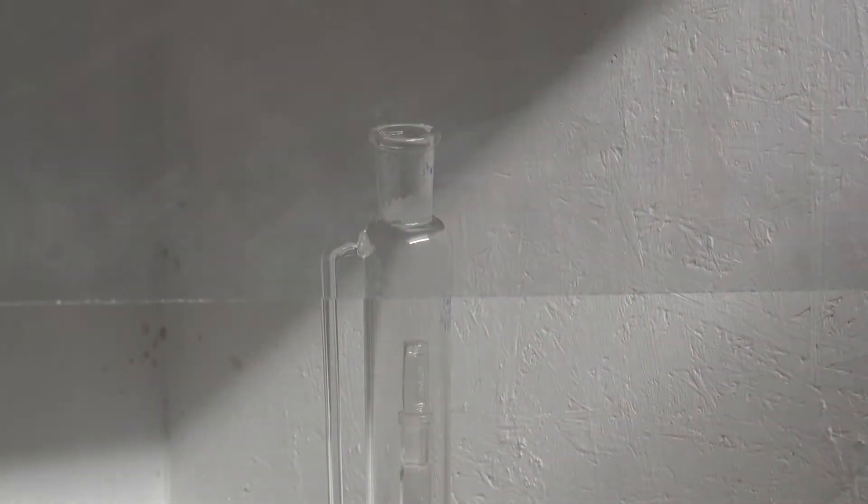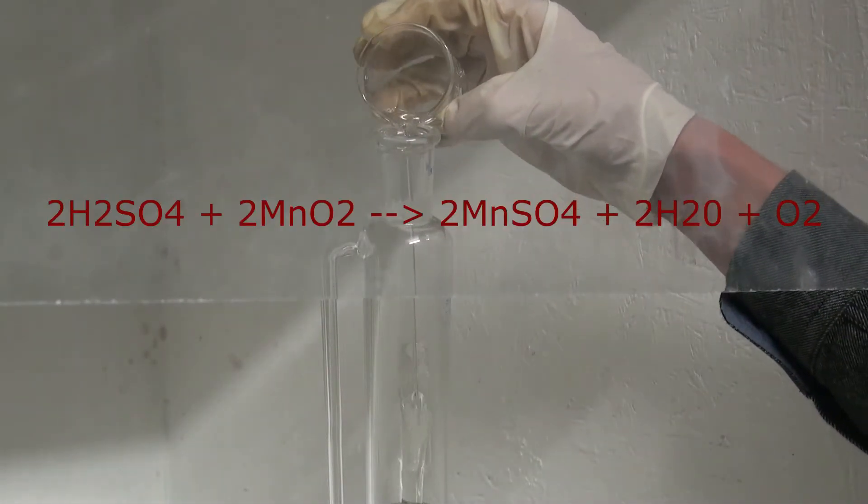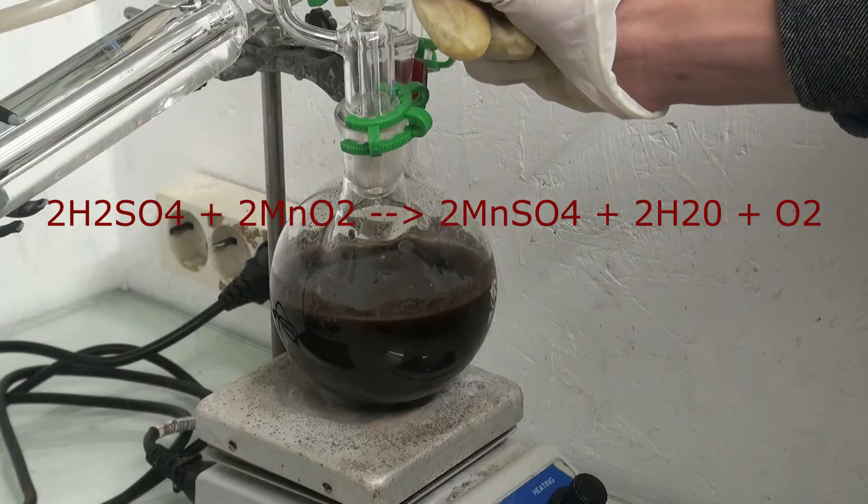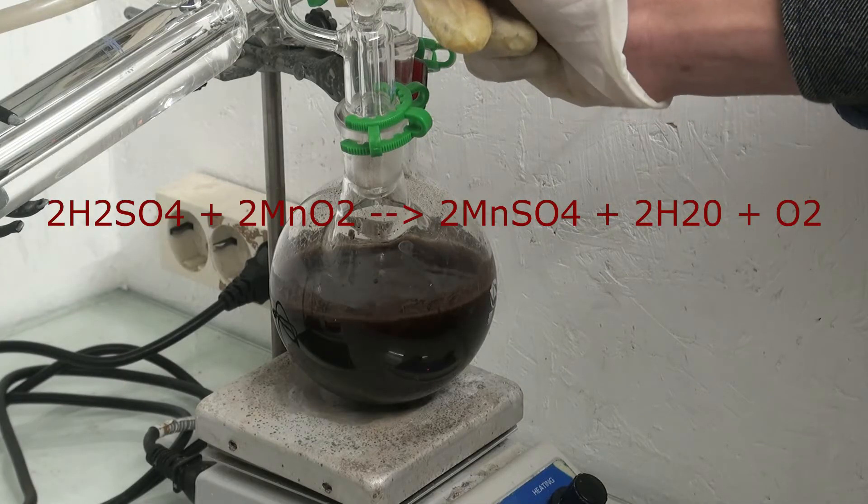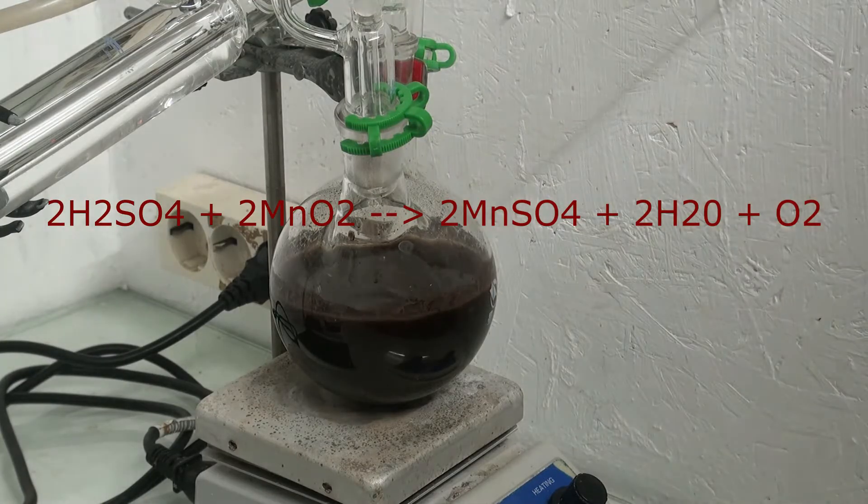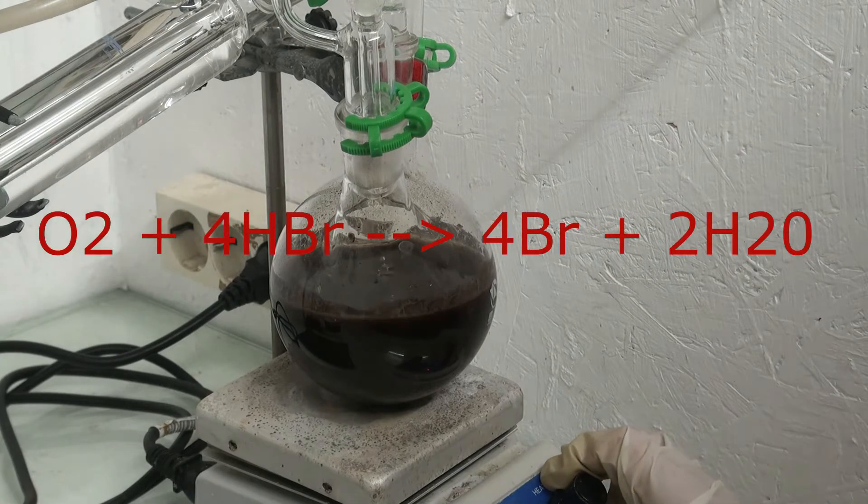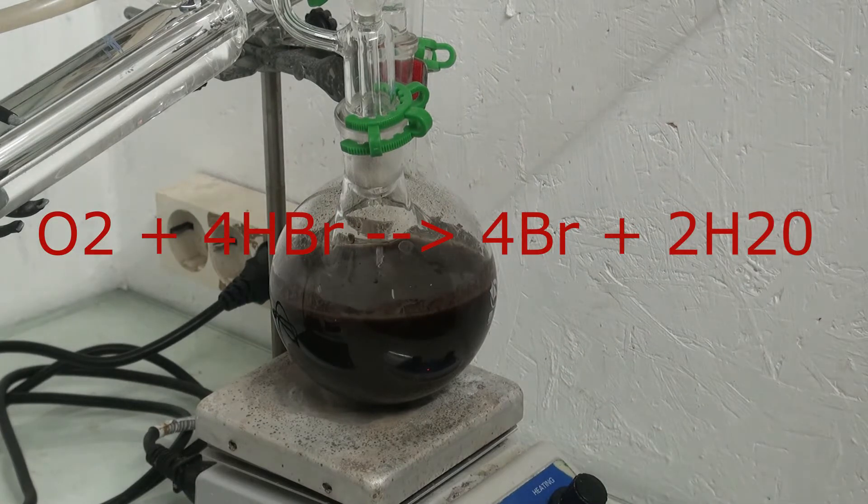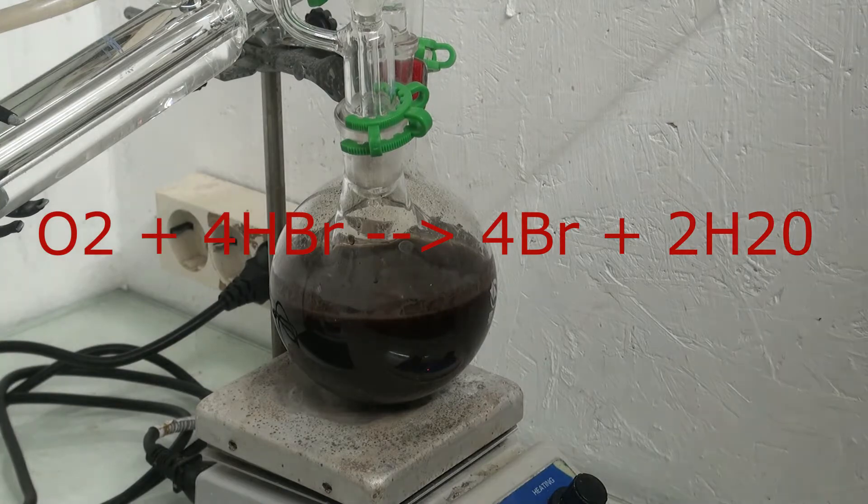From a pressure equalizing funnel, I slowly added in sulfuric acid. The sulfuric acid makes the manganese dioxide give off oxygen. The hydrobromic acid then reacts with the oxygen to form bromine.